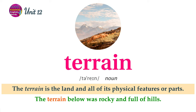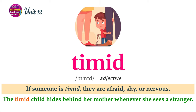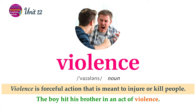The terrain is the land and all of its physical features or parts. The terrain below was rocky and full of hills. If someone is timid, they are afraid, shy, or nervous. The timid child hides behind her mother whenever she sees a stranger. Violence is forceful action that is meant to injure or kill people. The boy hid his brother in an act of violence.